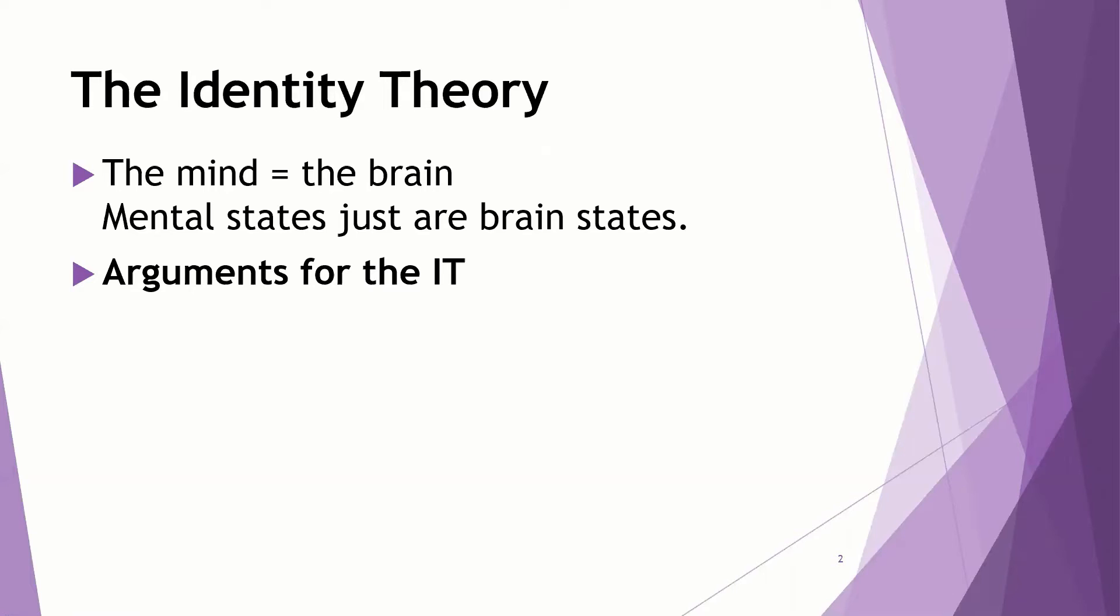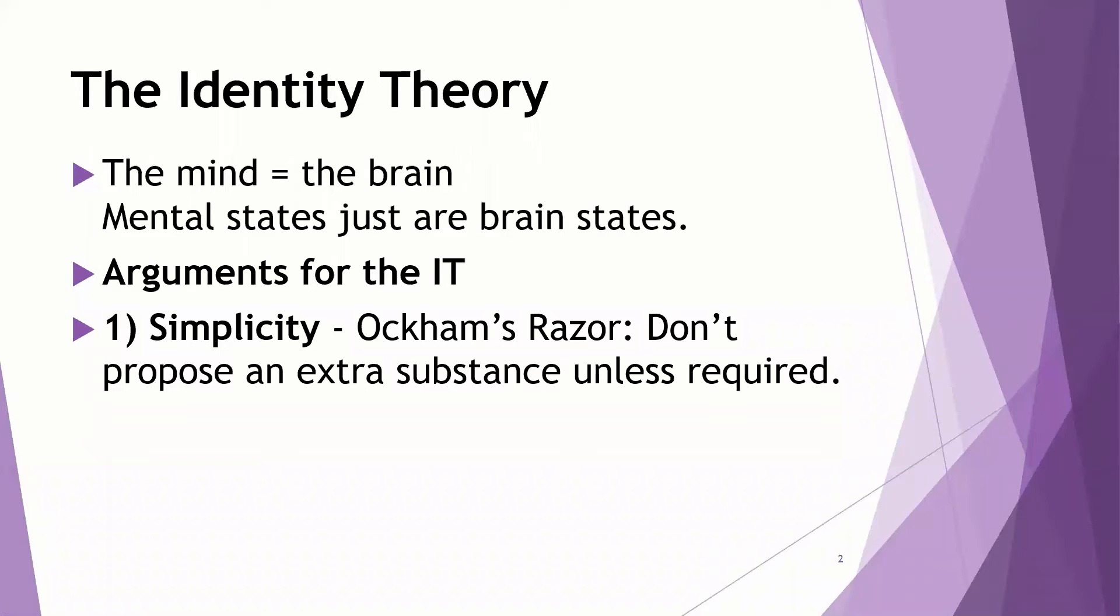And we have a few arguments for the identity theory, shortened IT here. One of the arguments is simply simplicity itself. So we have Occam's razor, for example, which can be stated in a wide variety of ways. A very simple way of stating it is to not propose an extra substance unless it's required. Keep things simple. The simplest explanation is the best explanation. We use simplicity as a value both in science and in philosophy. It's clear that the identity theory is the simplest theory of the mind.